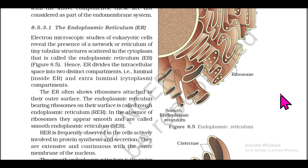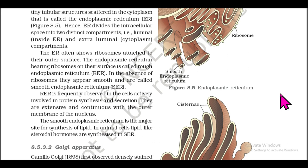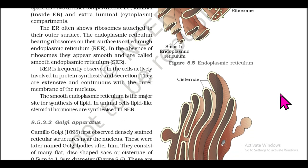Section 8.5.3.1: The Endoplasmic Reticulum (ER). Electron microscopic studies of eukaryotic cells reveal the presence of a network of tiny tubular structures scattered in the cytoplasm called the endoplasmic reticulum. The ER divides the intracellular space into two distinct compartments: luminal (inside ER) and extra-luminal (cytoplasm). The ER often shows ribosomes attached to its outer surface; when bearing ribosomes it is called rough endoplasmic reticulum (RER), and without ribosomes it is called smooth endoplasmic reticulum (SER).